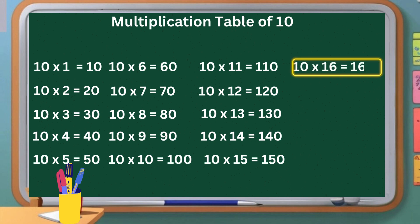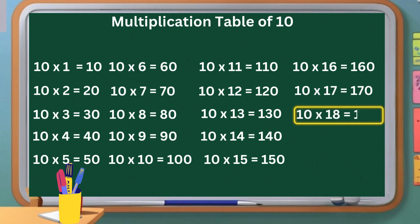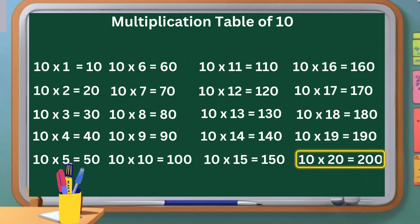10-16s are 160. 10-17s are 170. 10-18s are 180. 10-19s are 190. 10-20s are 200.